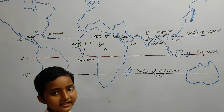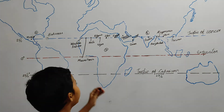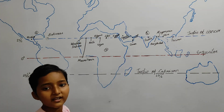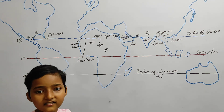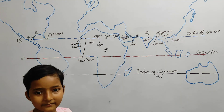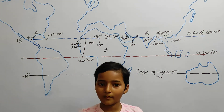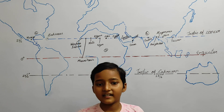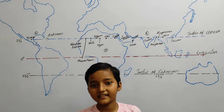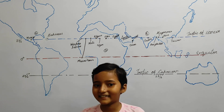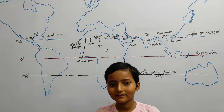Quiz time! The question is: which country in Africa, through which the Tropic of Cancer passes, is also known as 'Misr' in ancient times? Answer in the comment box. If you have any queries or doubts, please write in the comment box. Have a nice day, bye!